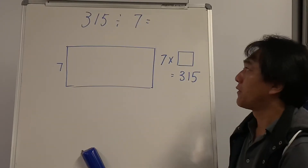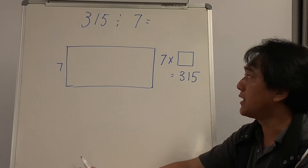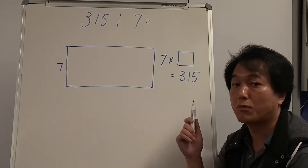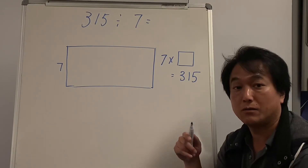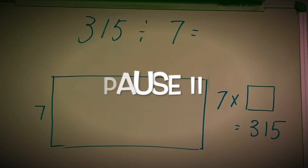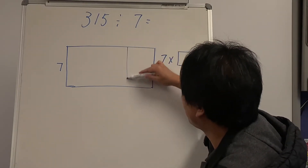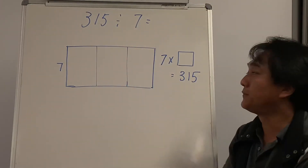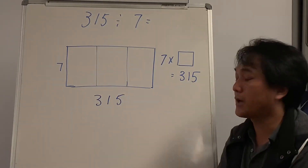Last question: 315 divided by 7. There is a slight problem here — pause the video. What kind of difficulty can you predict? Let's give it a shot. I'll divide this into three columns: hundreds, tens, and units. I have 315 cupcakes altogether.